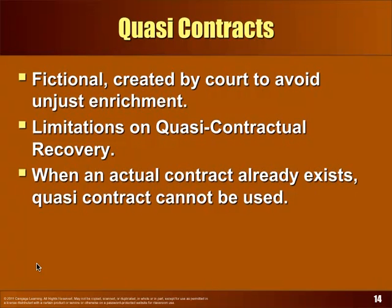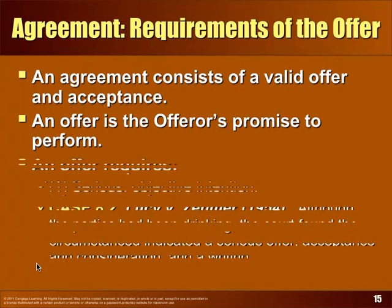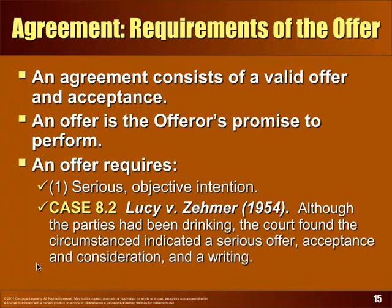Let's look at the elements of a contract in more detail: agreement. Remember, agreement is an offer and acceptance. Let's focus first on the offer. The offer has to be serious and objective — as mentioned with Lucy v. Zimmer. The court looks at objective facts rather than what one party says to try to avoid the contract.